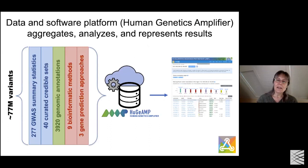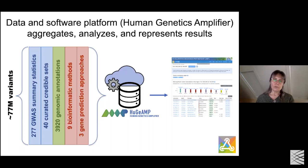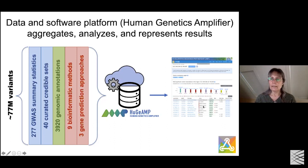All of this goes into our data and software platform called the Human Genetics Amplifier. It's a cloud-based platform that allows for federation. We have collaborators at EBI in England with data that cannot be transferred to the US due to privacy concerns, but federation allows our database to reach out to them, do calculations on the data, and bring back protected results. This federation mechanism allows us to be worldwide in a secure way. The platform aggregates the data, analyzes them, and prepares them for representation on the portal.